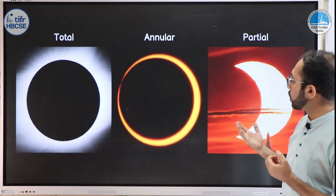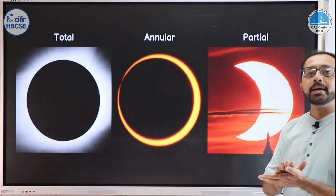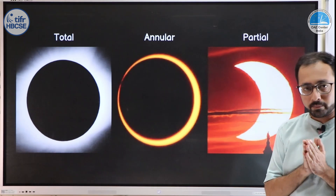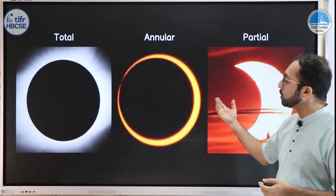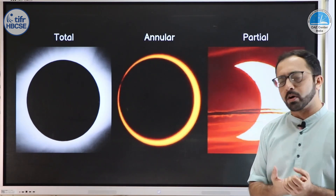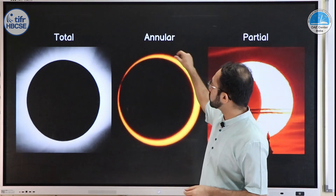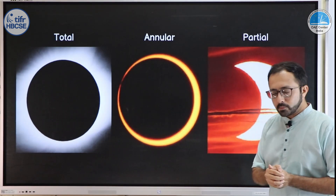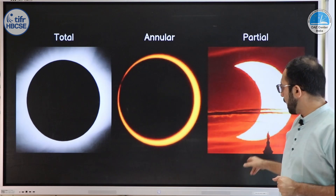There are different types of solar eclipse: a total solar eclipse where the moon completely covers the sun, a partial solar eclipse where the moon partially covers the sun, and an annular solar eclipse where the moon cannot completely cover the sun and you see something called an annulus or a ring of sun.